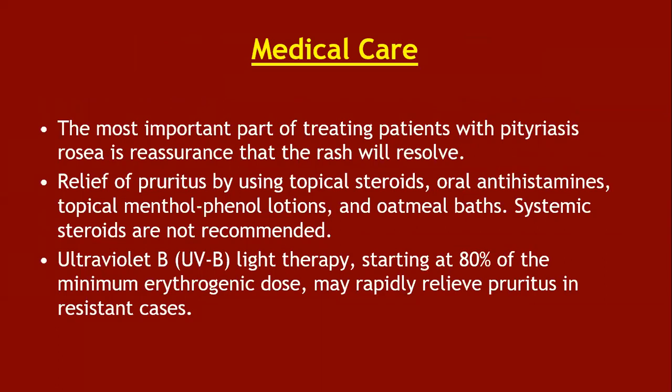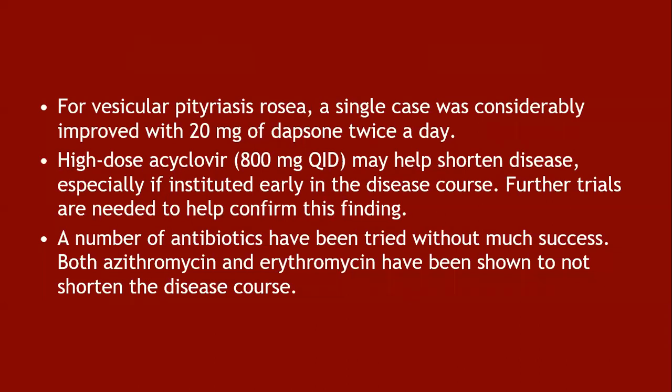The most important part of treating patients with pityriasis rosea is reassurance that the rash will resolve. Relief of pruritus can be achieved using topical steroids, oral antihistamines, topical menthol-phenol lotions, and oatmeal baths; systemic steroids are not recommended. UVB light therapy starting at 80% of the minimum erythemogenic dose may rapidly relieve pruritus in resistant cases. For vesicular pityriasis rosea, a single case was considerably improved with dapsone 20 mg twice a day. High-dose acyclovir 800 mg four times daily may help shorten the disease if instituted early. Both azithromycin and erythromycin have not been shown to shorten the disease course.